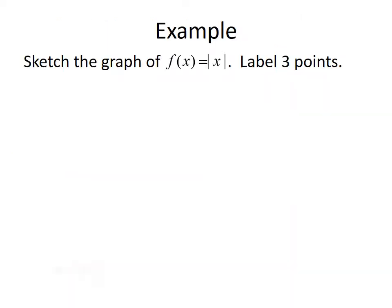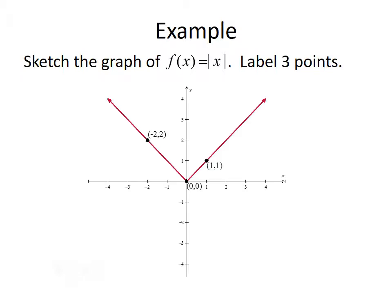For another example, let's use the library of functions to sketch the graph of f of x equals the absolute value of x, and be sure to label three points. The graph of the absolute value function takes a v-shape, and we can pick three arbitrary points: 0, 0; 1, 1; and negative 2, 2. These are all points that are on the graph — your points may vary if you did this yourself.